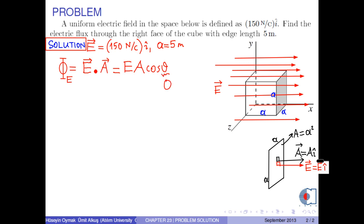Therefore, angle theta between them is 0. So, cosine theta is 1, and we write E times A.